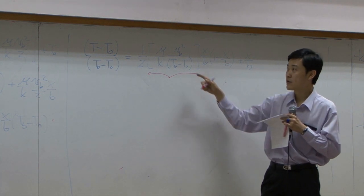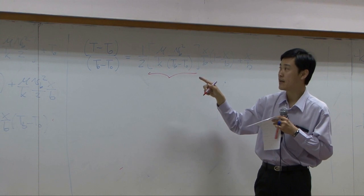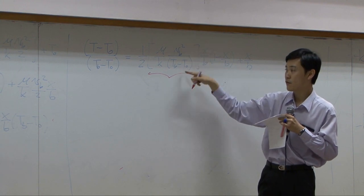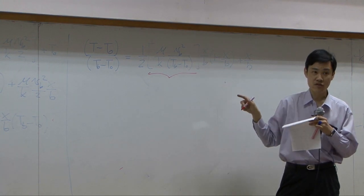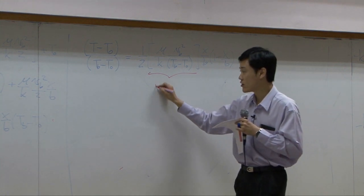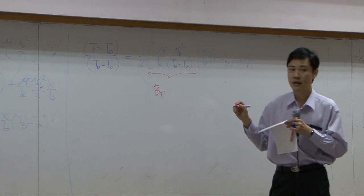If you check the unit for viscosity over thermal conductivity times velocity squared over T, you get dimensionless. This dimensionless form is called Brinkman number.